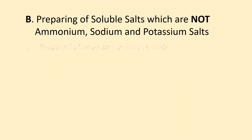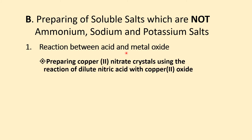Preparing soluble salts other than ammonium, sodium, and potassium — reaction between acid and metal oxide. We want to prepare copper(II) nitrate crystals using the reaction between dilute nitric acid and copper(II) oxide. Copper(II) nitrate is blue because it contains copper(II) ions. Dilute nitric acid is a colorless solution, and copper(II) oxide is a black powder.